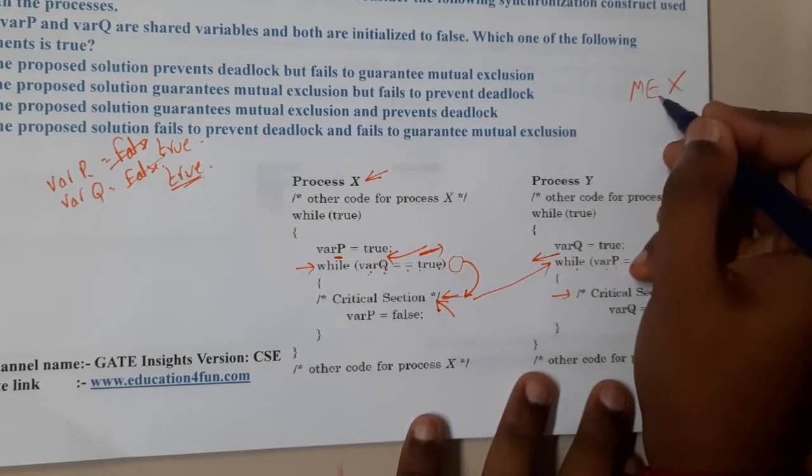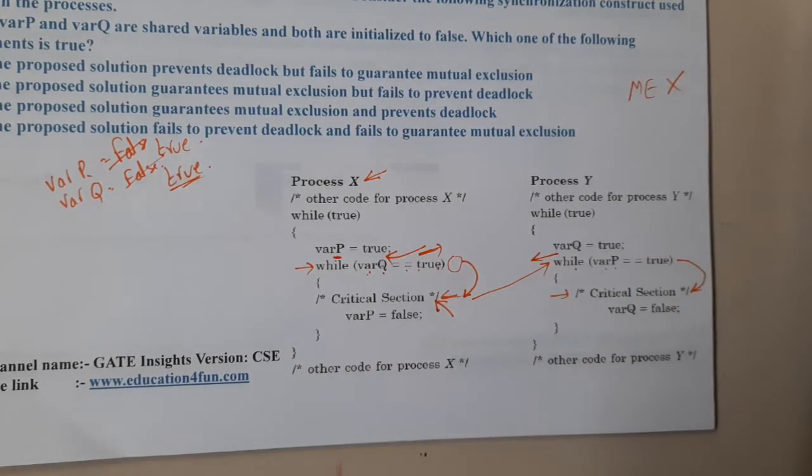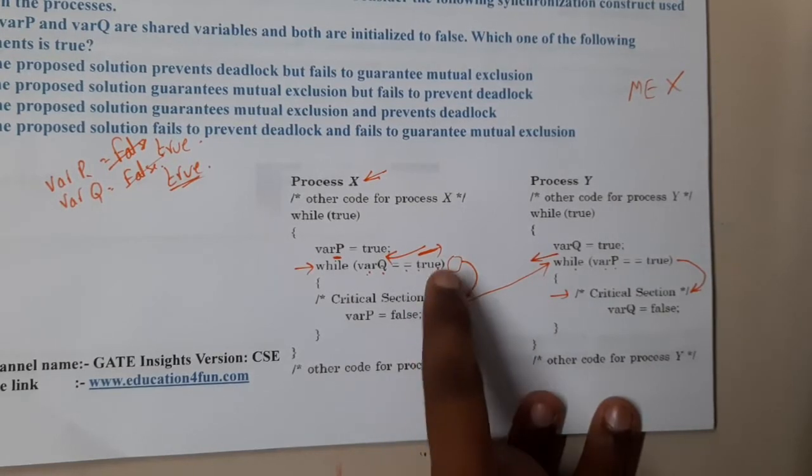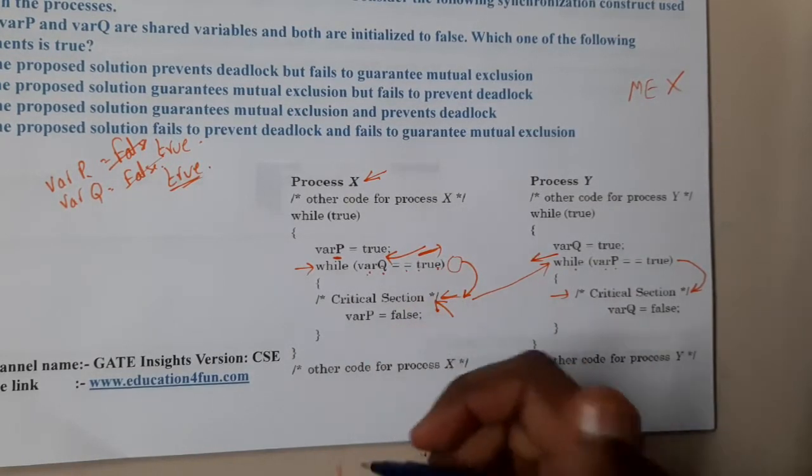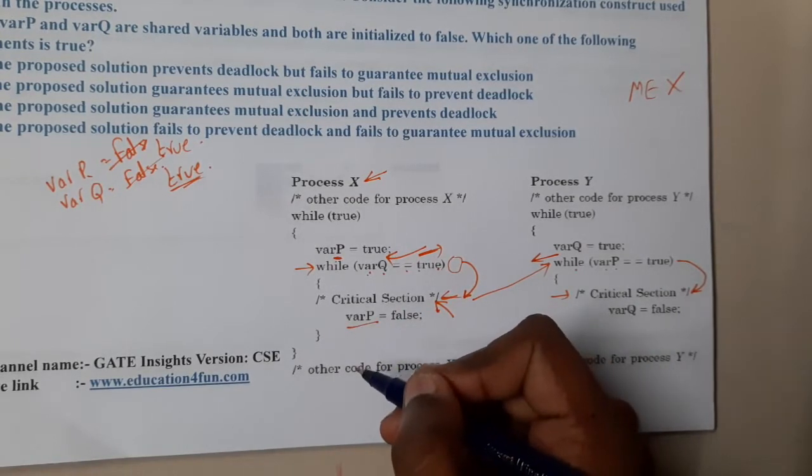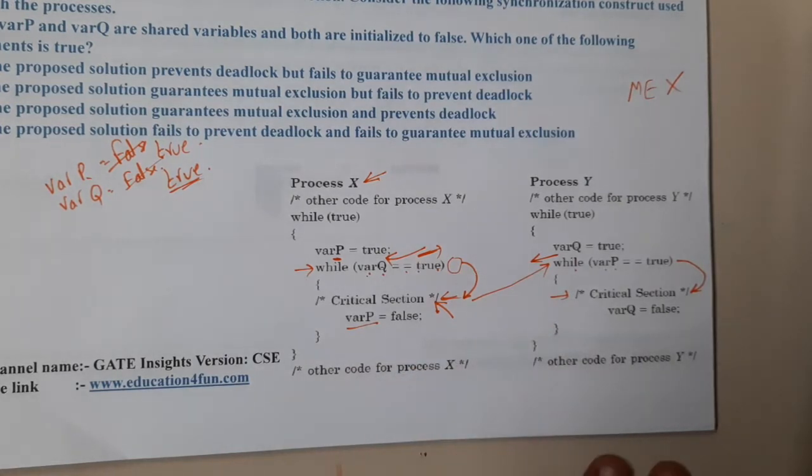If mutual exclusion is not there, then how will deadlock be there? Anyway, let us try to create that deadlock also. Now both of them are inside the critical section. If this guy wants to go out, he will update that varP to false and he will leave.